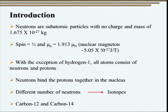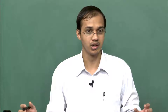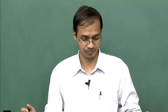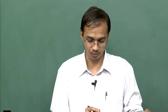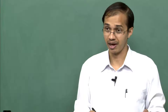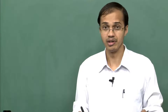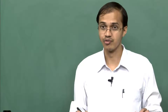With the exception of hydrogen-1, all atoms consist of neutrons and protons. The neutrons bind the protons together in the nucleus because protons with their positive charges have a tendency to repel each other — neutrons act as glue. For the same atom, if the number of neutrons differs, such atoms are known as isotopes. A classic example is carbon-12 with 6 protons and 6 neutrons, and carbon-14 with 6 protons but 8 neutrons.